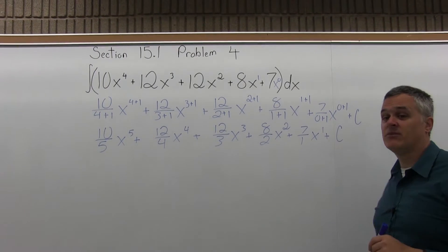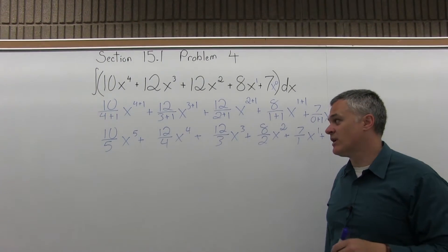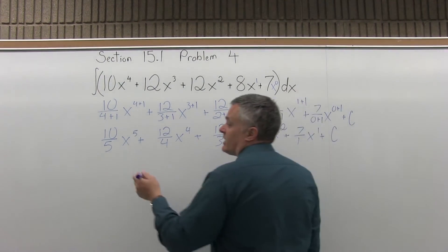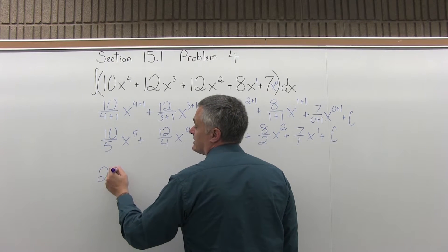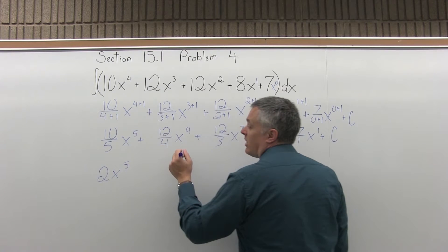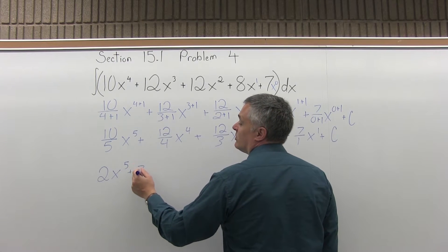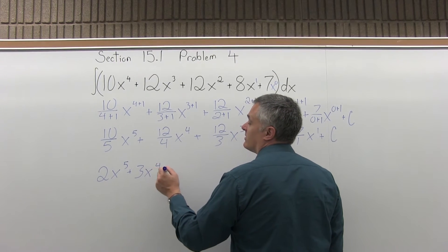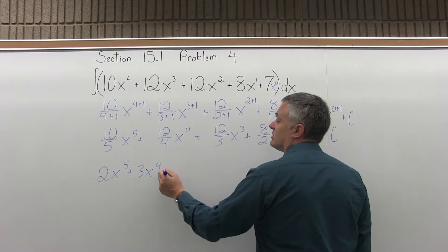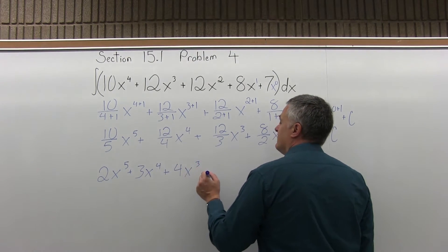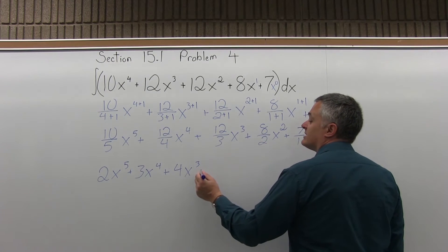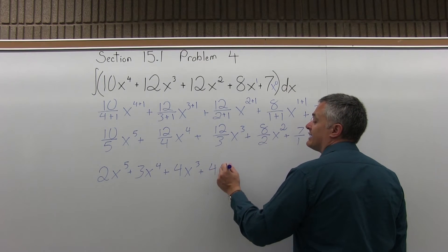Again, plus some constant, some number that had no variable. And now all these fractions reduce. 10 fifths x to the 5th will be 2x to the 5th. Then 12 fourths x to the 4th will be 3x to the 4th. Then 12 thirds x to the 3rd will be 4x to the 3rd.